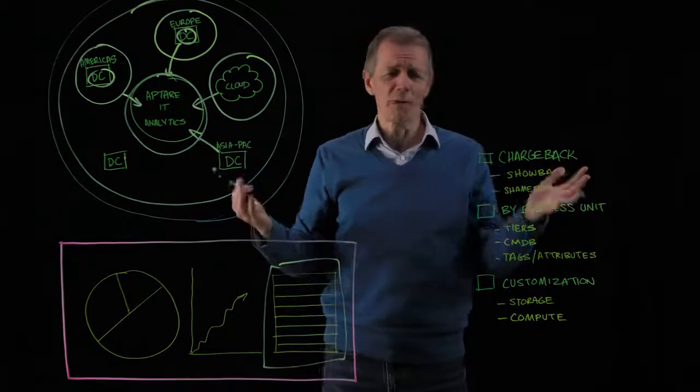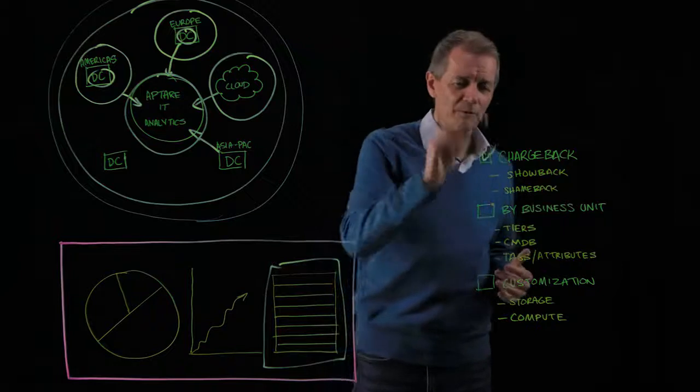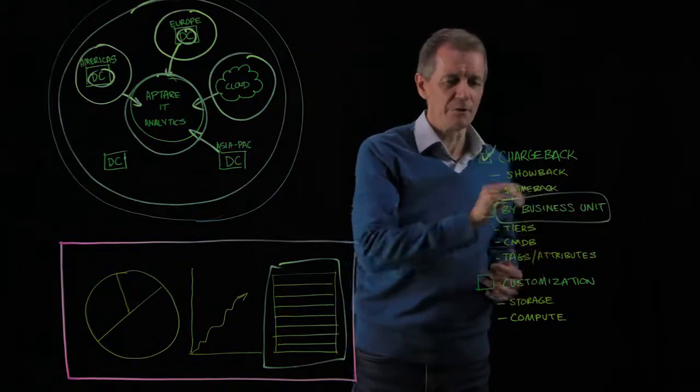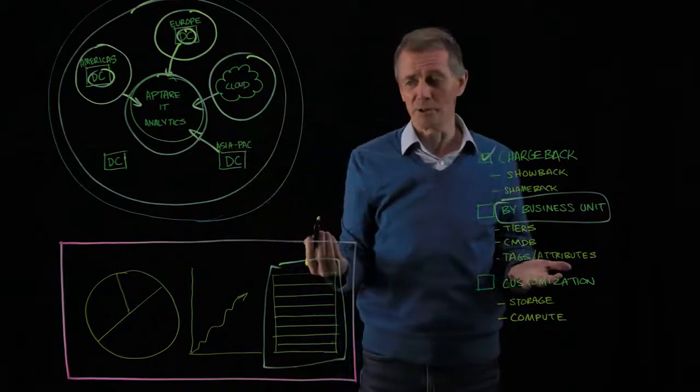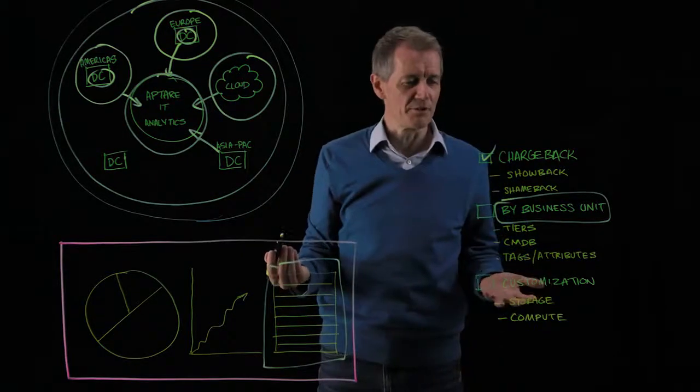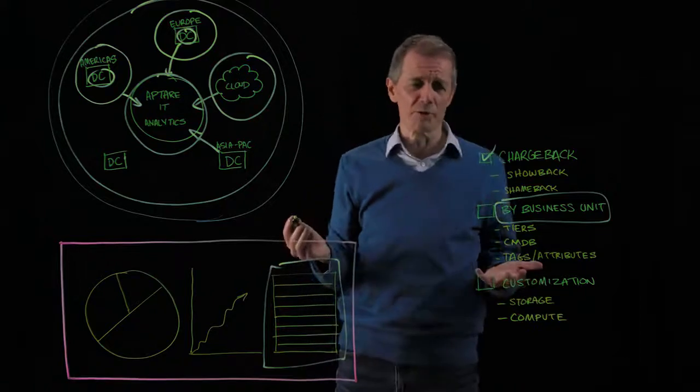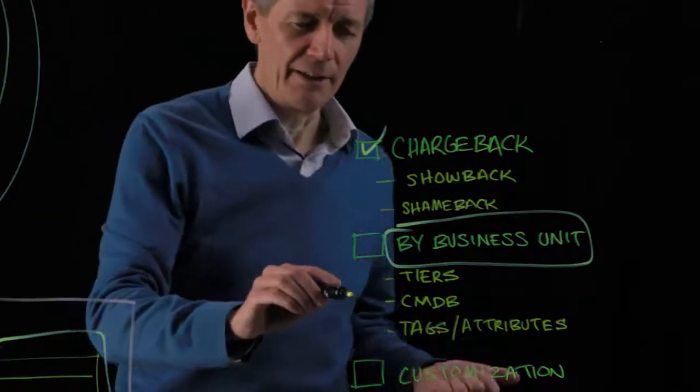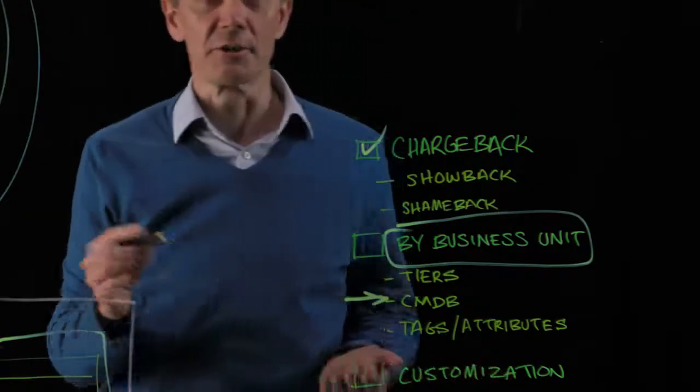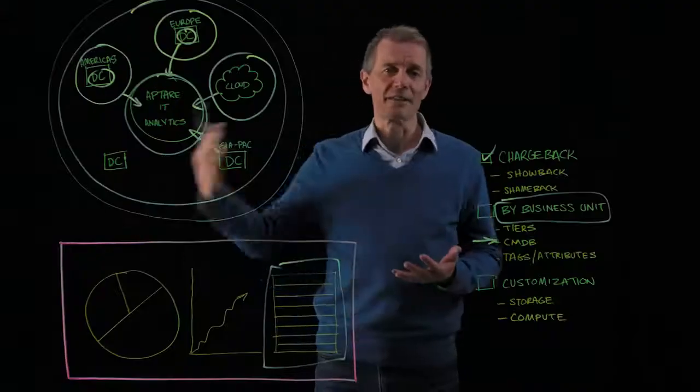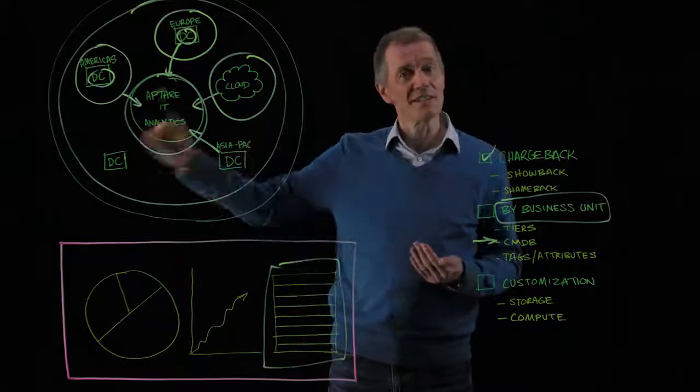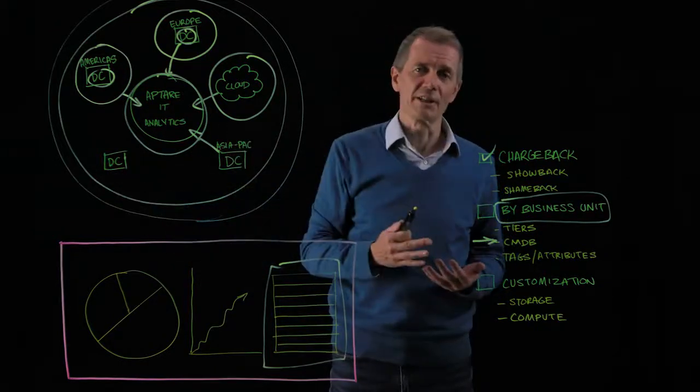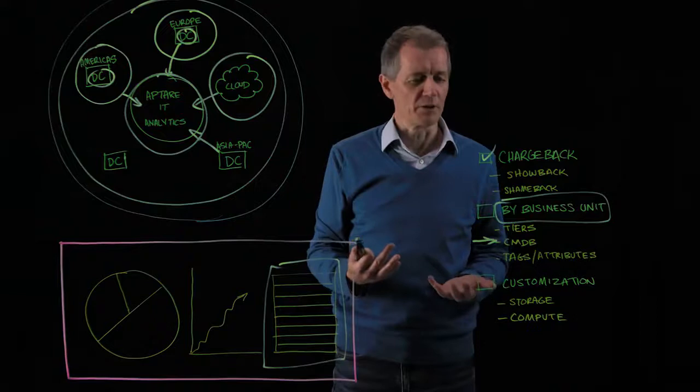So how do we do that? One of the key things that our customers want to be able to do is see how these assets are utilized by business unit. How do we determine a business unit? There's multiple ways we can do that. We can interface to an external CMDB. So if there's an external source such as ServiceNow that is listing all of those assets and the business units they belong to, we can consume that as part of our Chargeback reporting.